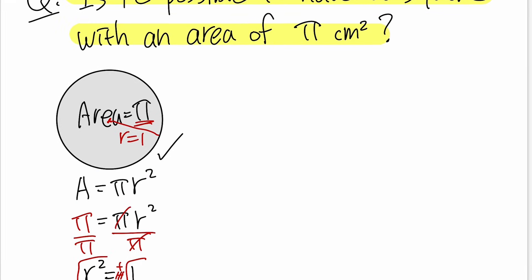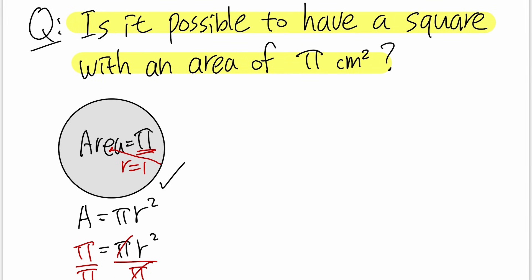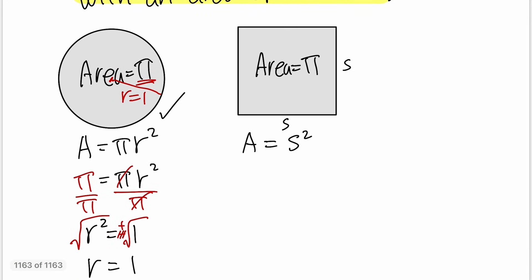Now we're talking about squares, okay? So let's say here is a square like this, and again we want the area to be π. Okay, so area of a square A is equal to s² where s is the length of each side, right? So we will do the same thing. We know π is going to be for the area.